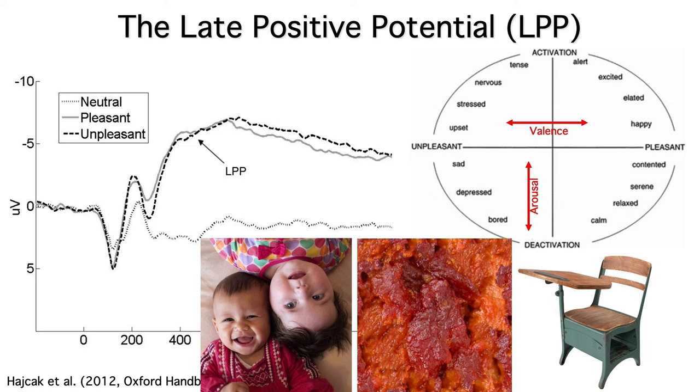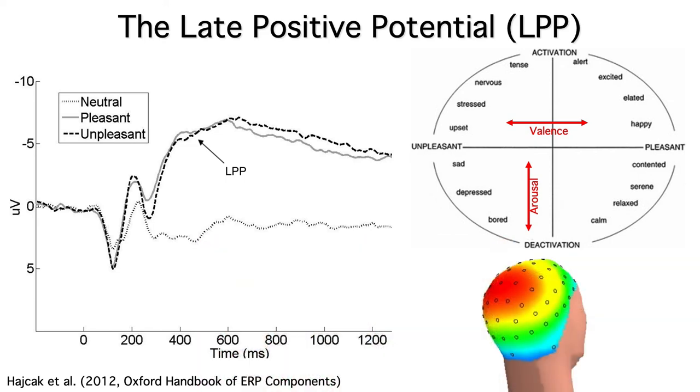Some researchers think that the LPP is the same thing as the P3. It has a pretty similar scalp distribution. But other researchers think that other sources also contribute to the LPP.